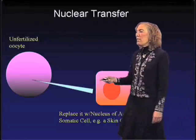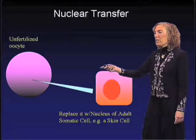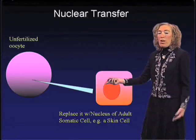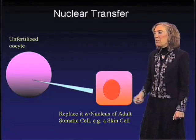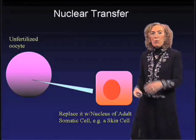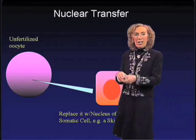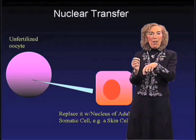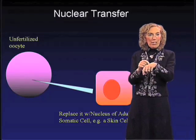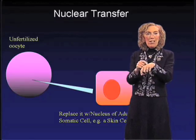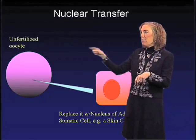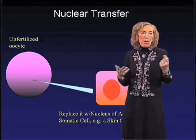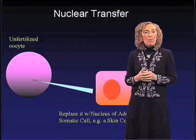We take and replace it with the nucleus of an adult stem cell or any other type of somatic cell. For example, we could take a small piece of skin, pull out the nucleus from that cell, and implant it into the unfertilized oocyte. We do that process with mice.